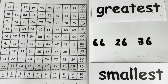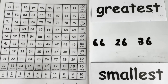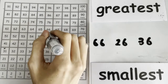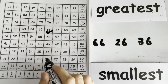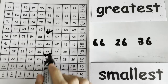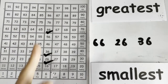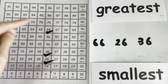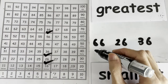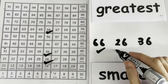Let's do this example. Which number is the greatest and which is the smallest? Let's find 66, 26, and 36 on the chart. All of them are on the same line. Which is the greatest — the one highest up on the chart? 66 is the greatest. And which is the smallest — the lowest down on the chart? It's 26.